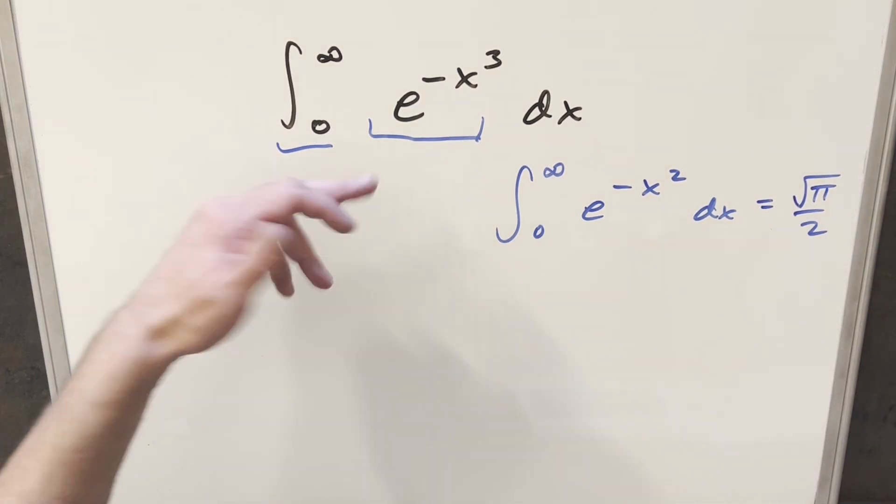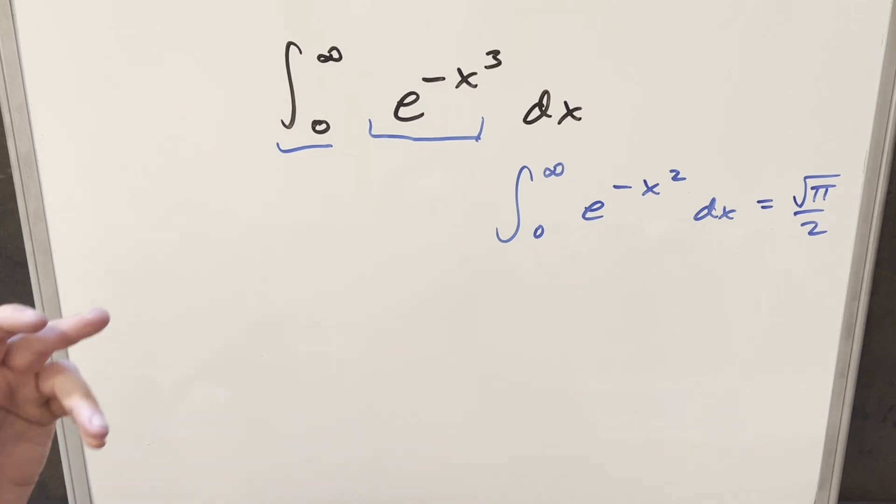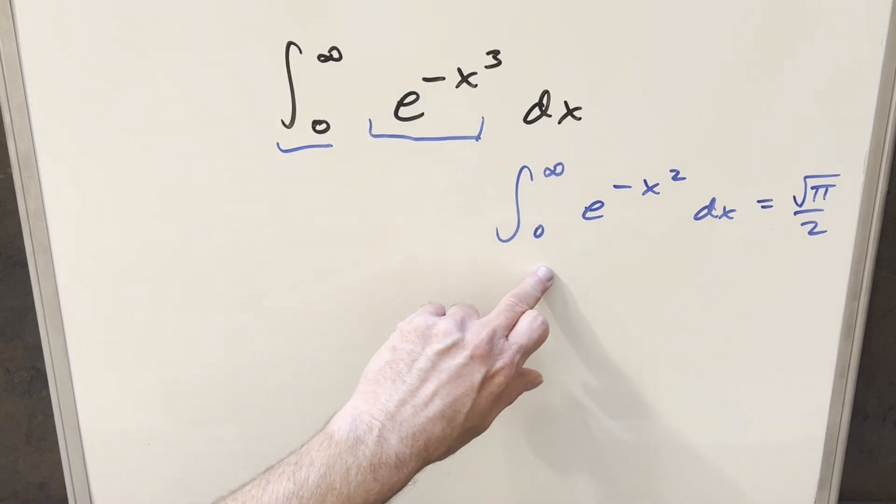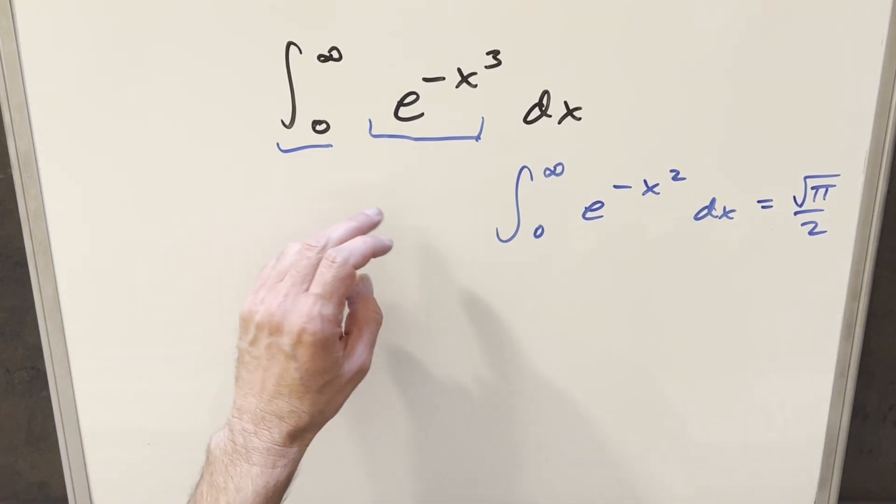What I was hoping is that it would come up to some nice value, maybe like √(π³) or something. Unfortunately, this one's not going to be quite as elegant as the Gaussian integral, so don't get your hopes up too much.